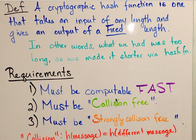The requirements for a hash function. The function must be computable fast. Why is that? Because if the function is not computable fast, remember the idea is to make you be able to process data faster — to make it less data so that it goes faster. So if the function itself is not fast, you're defeating the purpose.